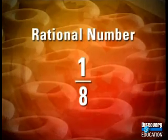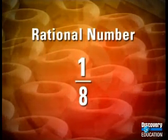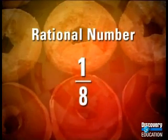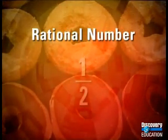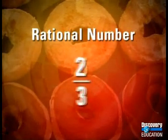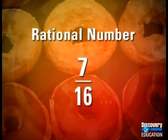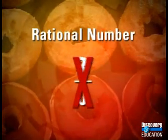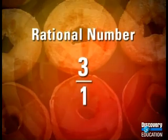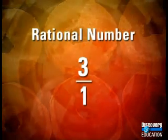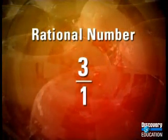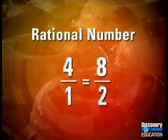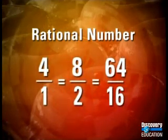A rational number is any number that can be expressed as a ratio of integers — a fraction in which the numerator and denominator are both integers. For example, one half is a rational number. So is two thirds, five eighths, seven sixteenths. But the denominator can never be zero. You can also say that any integer is a rational number because you can think of it as a ratio of integers — itself over one. Four can be written as four over one, or as eight over two, or even as sixty-four over sixteen.